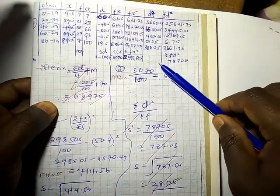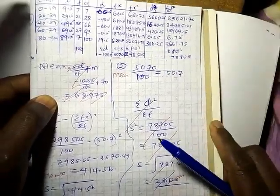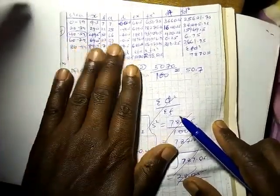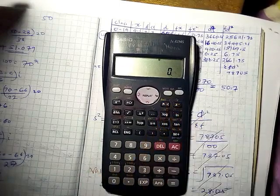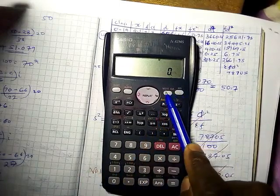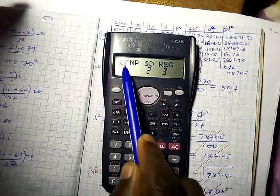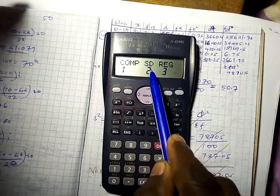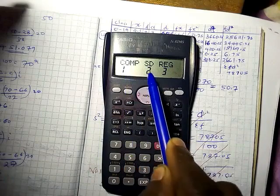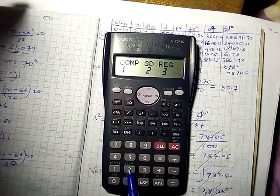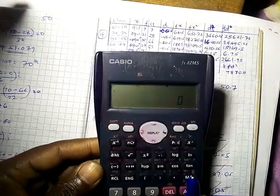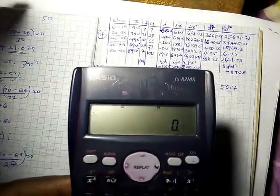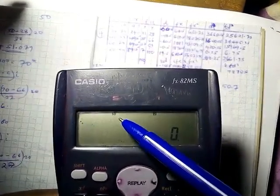Once you have finished calculating, you can check using your calculator directly. The first thing we do on our calculator, we press mode. Press mode, you get comp SD. So we press 2 to select SD. If you look at the calculator, it now has SD here for standard deviation.